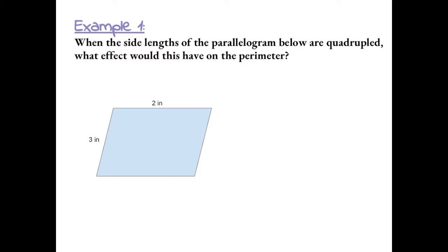When the side lengths of the parallelogram below are quadrupled, what effect would this have on the perimeter? To be quadrupled means to be multiplied by 4. So if each side of the polygon is multiplied by 4, then the perimeter would also be multiplied by 4.